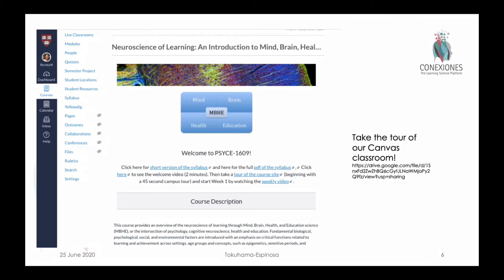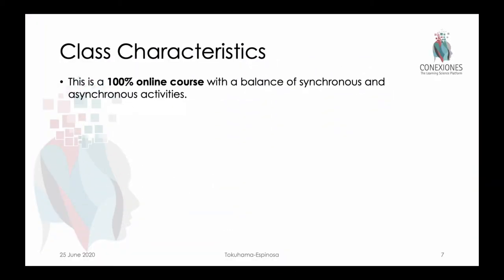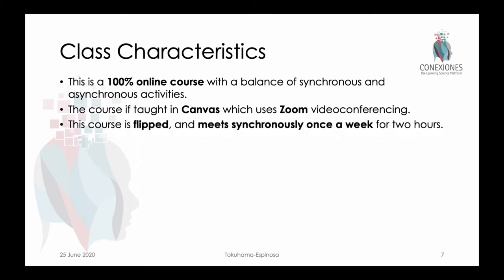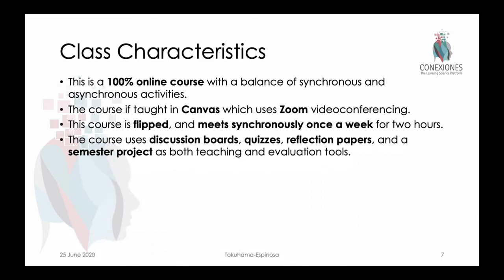Many of you watching this video have already seen the tour of our online classroom in Canvas — please feel free to do that to get a sense of how things are laid out. This course is taught 100% online. It has a balance of synchronous and asynchronous activities. We use Canvas as our LMS and Zoom for video conferencing. It is a flipped course. We meet synchronously once a week for two hours. We use discussion boards, quizzes, reflection papers, and a semester project, but not in exactly the same way you might be familiar with.